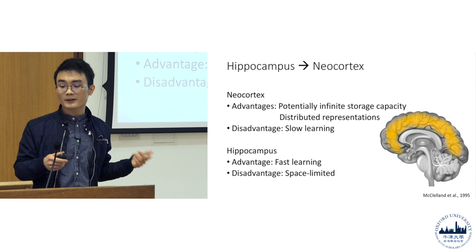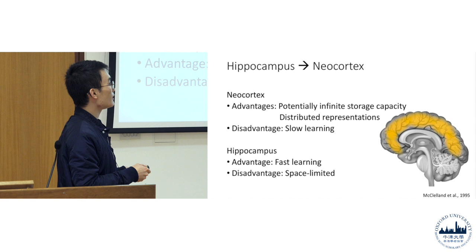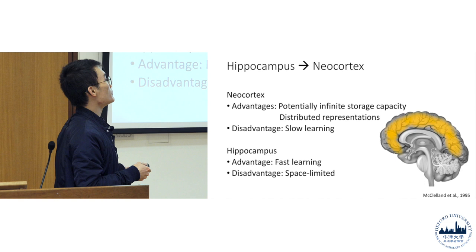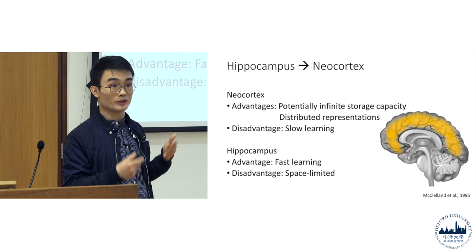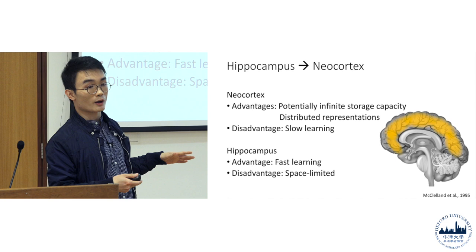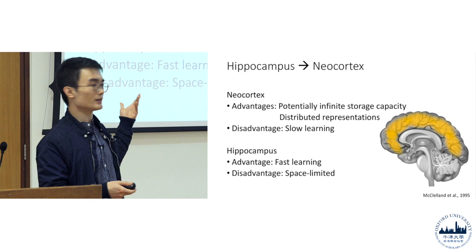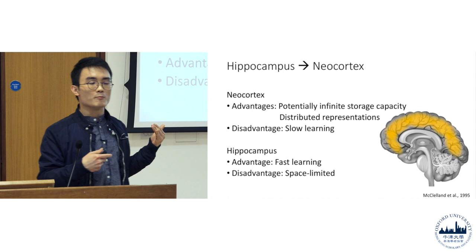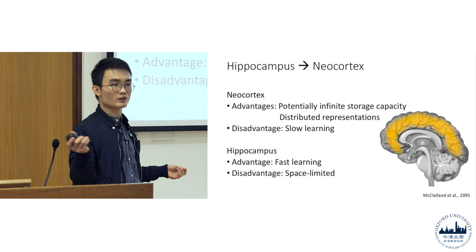Another advantage of the neocortex is that memories are distributed across the entire neocortex. Meaning that if there's damage in the frontal part of your brain, the memories in the posterior part of your brain will be relatively intact, so your life wouldn't be that miserable. But if memories were stored in only one area, such as the hippocampus, and if a stroke happened in the hippocampus, you would lose basically all your memories. So that's why we need memories to be stored in the neocortex — in a sense, it resembles putting all your eggs in different baskets.